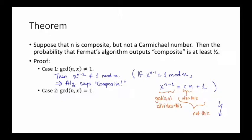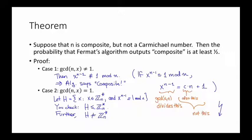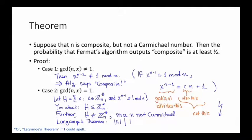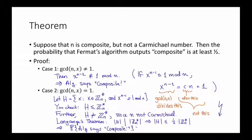Thus, in case 1, the algorithm is always going to say composite, and it will be correct. Case 2 is when the GCD of n and x is equal to 1. In this case, let H be the set of x's so that x is in Z_n* and x^(n-1) ≡ 1 mod n. You can check that H is a subgroup of Z_n*. Further, H is not equal to Z_n* because we said that n was not a Carmichael number. That means there's at least one x, so that x^(n-1) is not equal to 1 mod n. Now recall from the previous video that Lagrange's theorem implies that the size of H divides the size of Z_n*, which in particular implies that the size of H is at most 1/2 times the size of Z_n*. But this implies that the x that was picked in Fermat's algorithm is not in H with probability at least 1/2. And H is exactly the set of x's so that Fermat's algorithm is going to say prime. Therefore, the probability that the algorithm says composite is at least 1/2. And this proves the theorem.